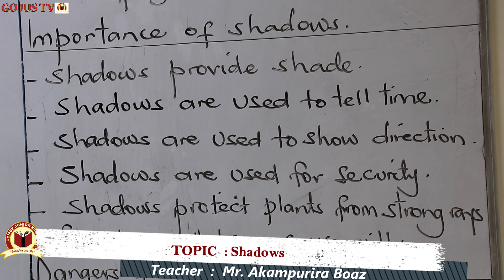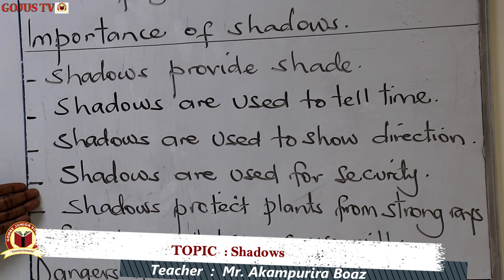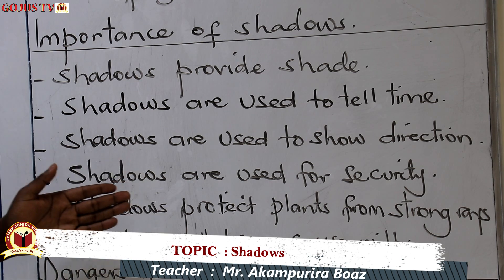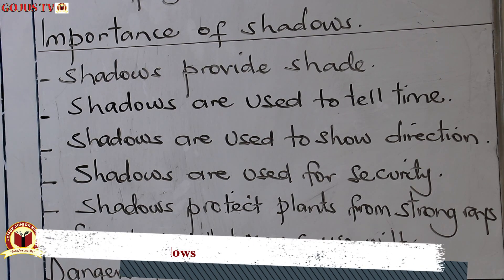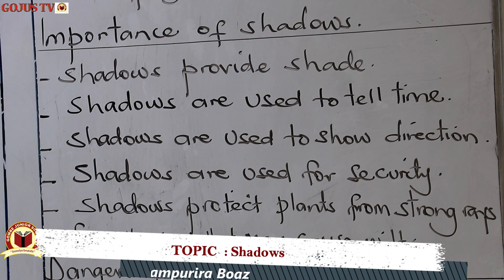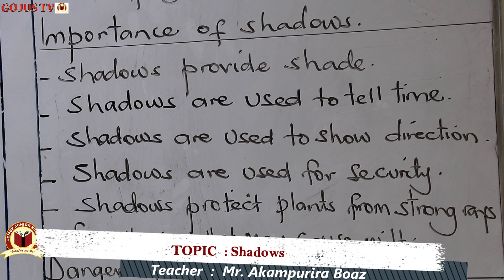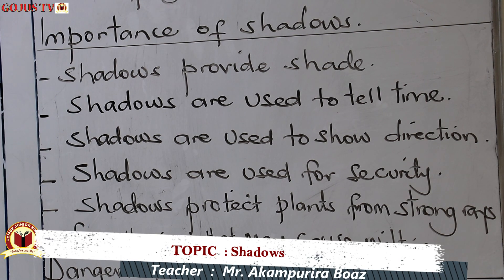Three, shadows are used to show direction. Four, shadows are used for security — one can hide from an enemy because you do not hide under light; you must keep yourself in the dark so that you are not recognized. Some organisms, for example bedbugs and cockroaches, use dark regions as mechanisms of protection.